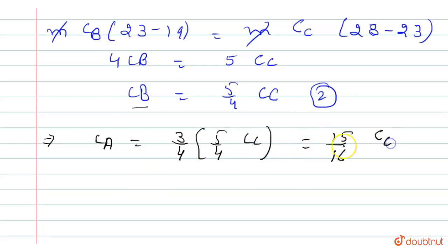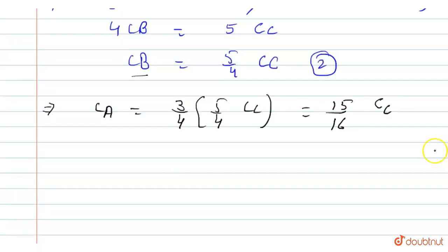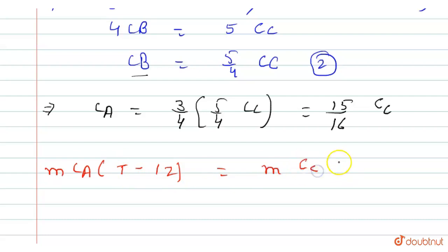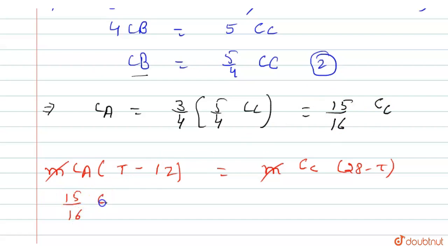Now we can write the equation for A and C. m is the mass, Ca is the specific heat, and the temperature difference is T minus 12, where T is the temperature we need to find. This equals m times Cc times 28 minus T. The m cancels, and we substitute Ca = (15/16)·Cc, giving (15/16)·Cc·(T − 12) = Cc·(28 − T).